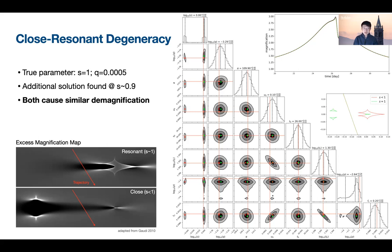Below the light curve, you can see the trajectories and the caustics of the two solutions. And to the bottom left, you see the magnification maps of the two solutions which shows that the closed and resonant topologies cause similar magnification patterns on the trajectory.